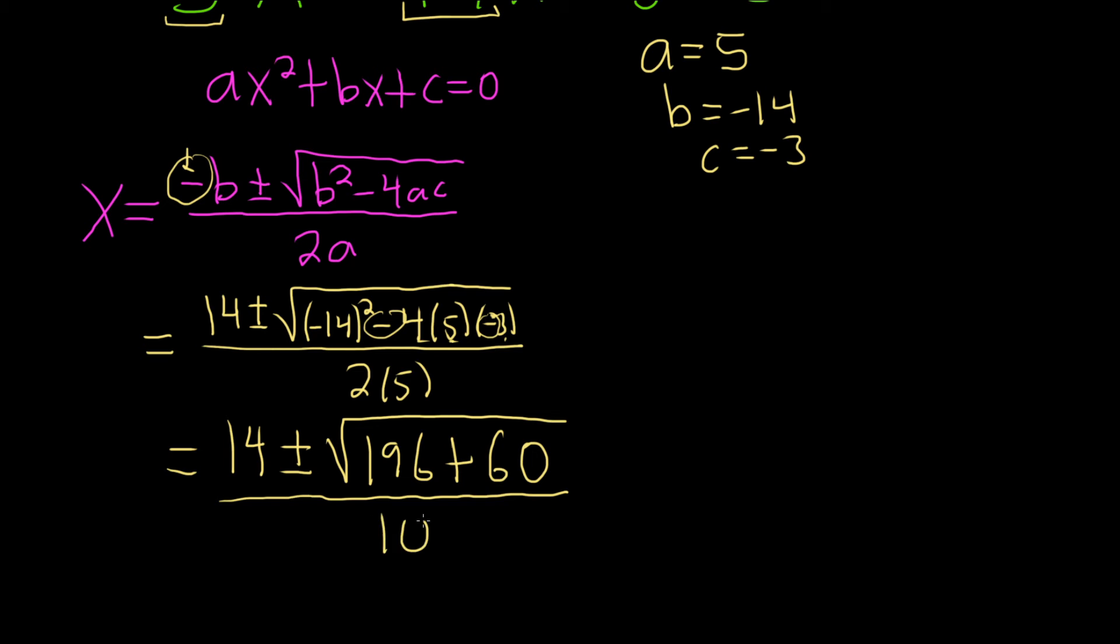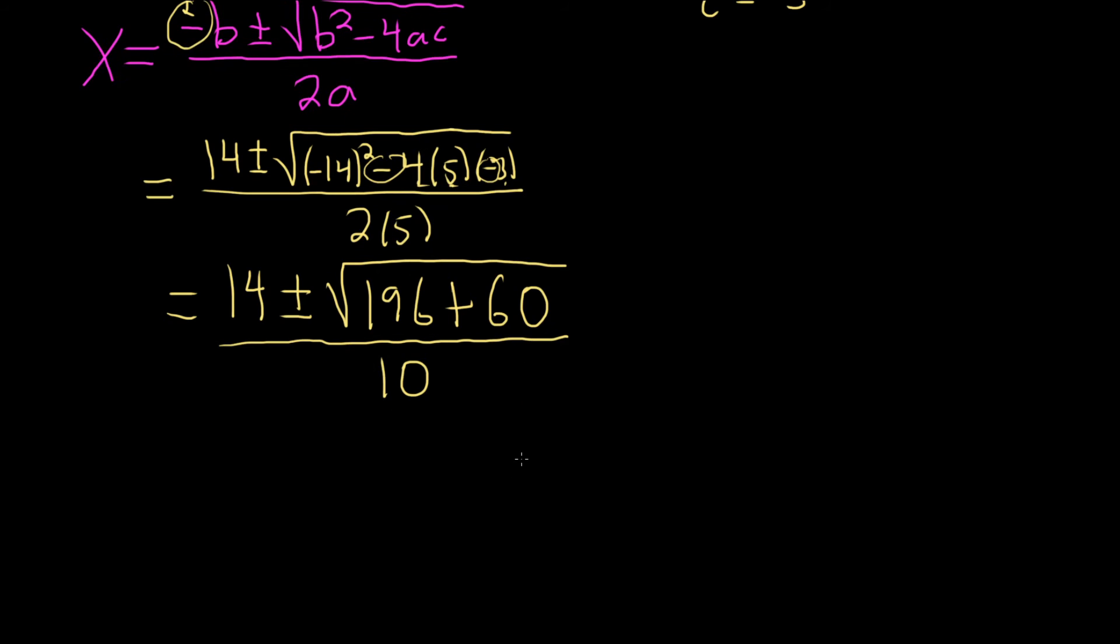Not the easiest example. So this is equal to 14 plus or minus—196 plus 60 is 256. This is the square root of 256, all being divided by 10.